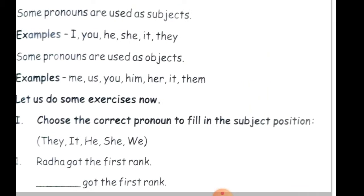Some pronouns are used as subjects. The subject pronouns are: I, you, he, she, it, they - these are the personal pronouns we read. And the object pronouns are: me, you, him, her, it, them. Now we will see which words are used in the subject position and which are used in the object position.